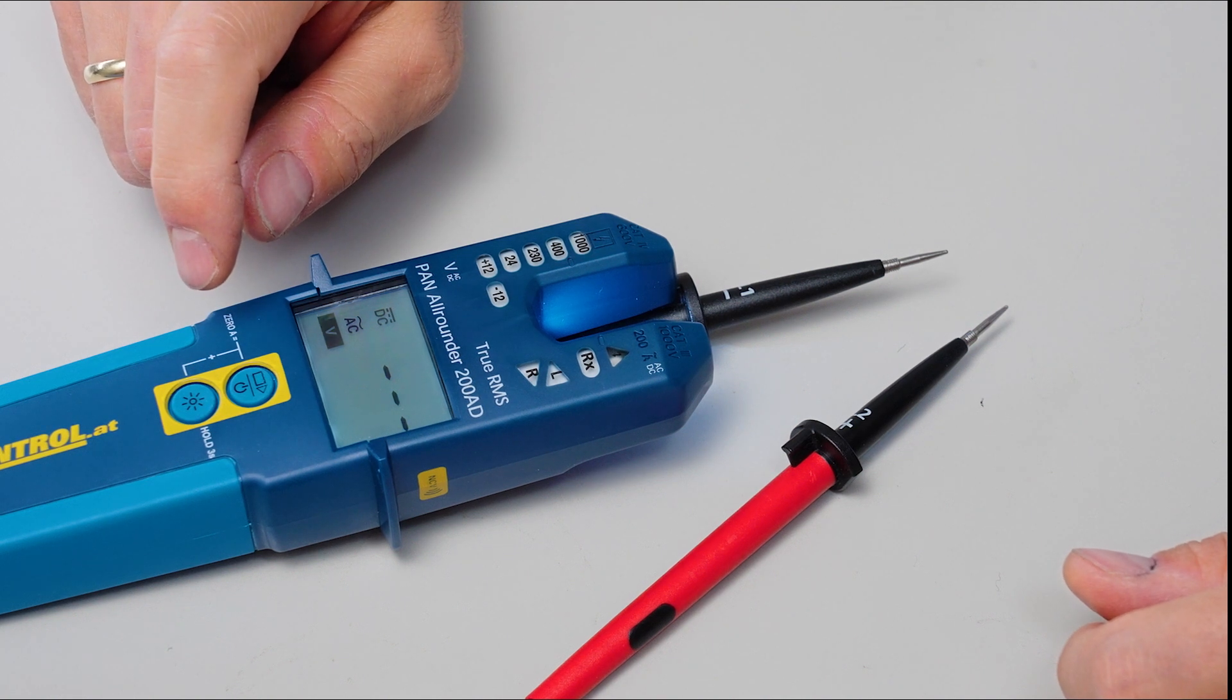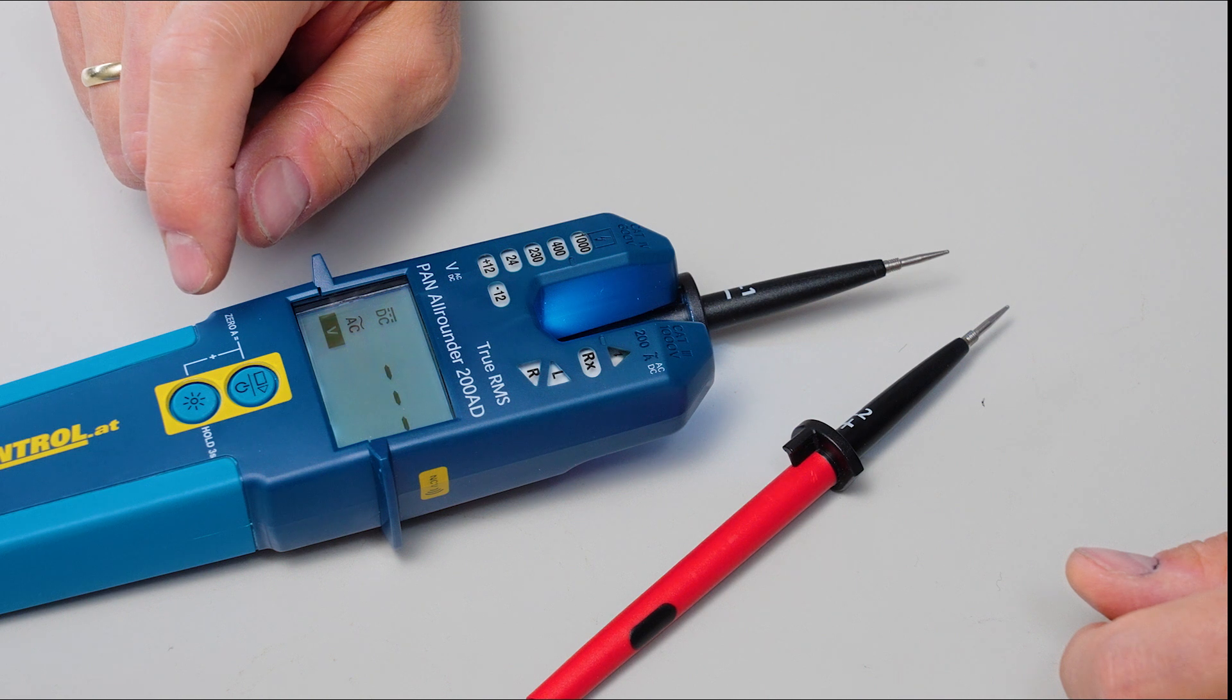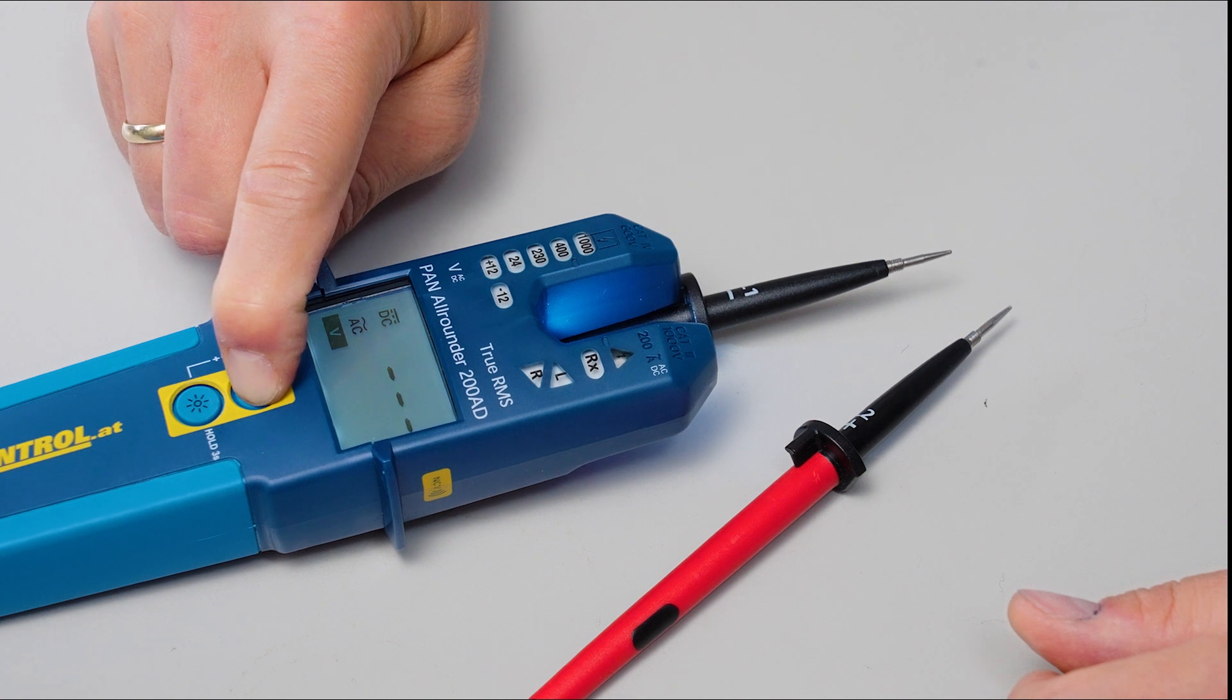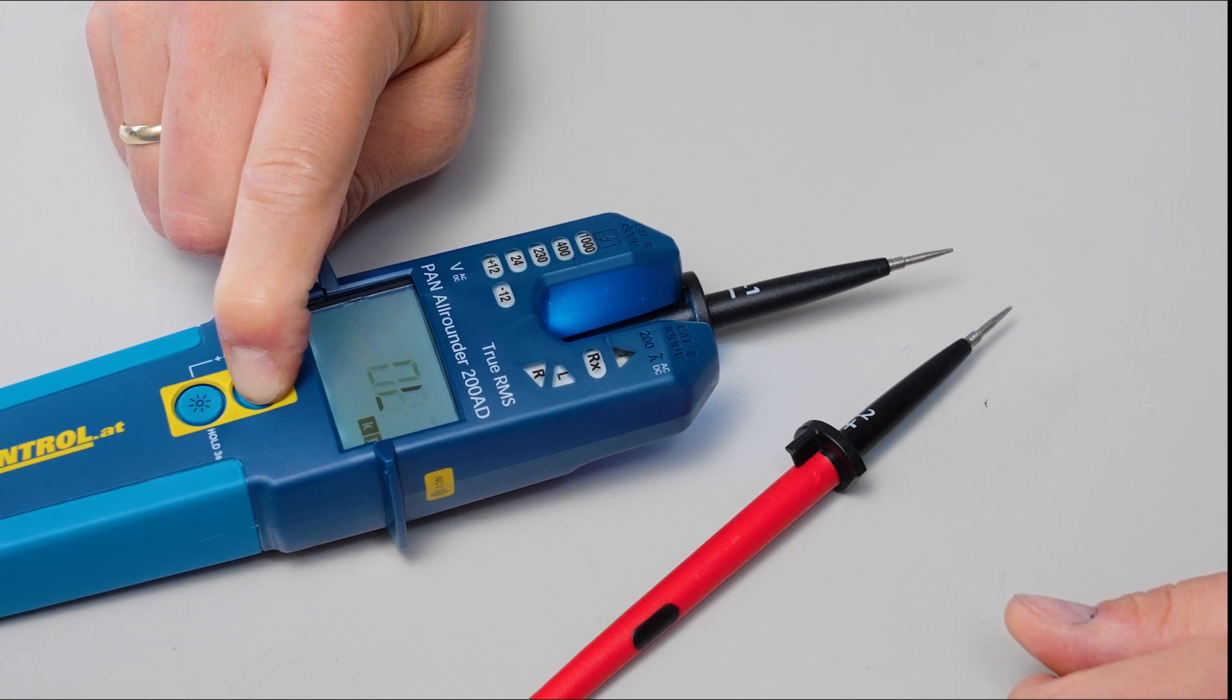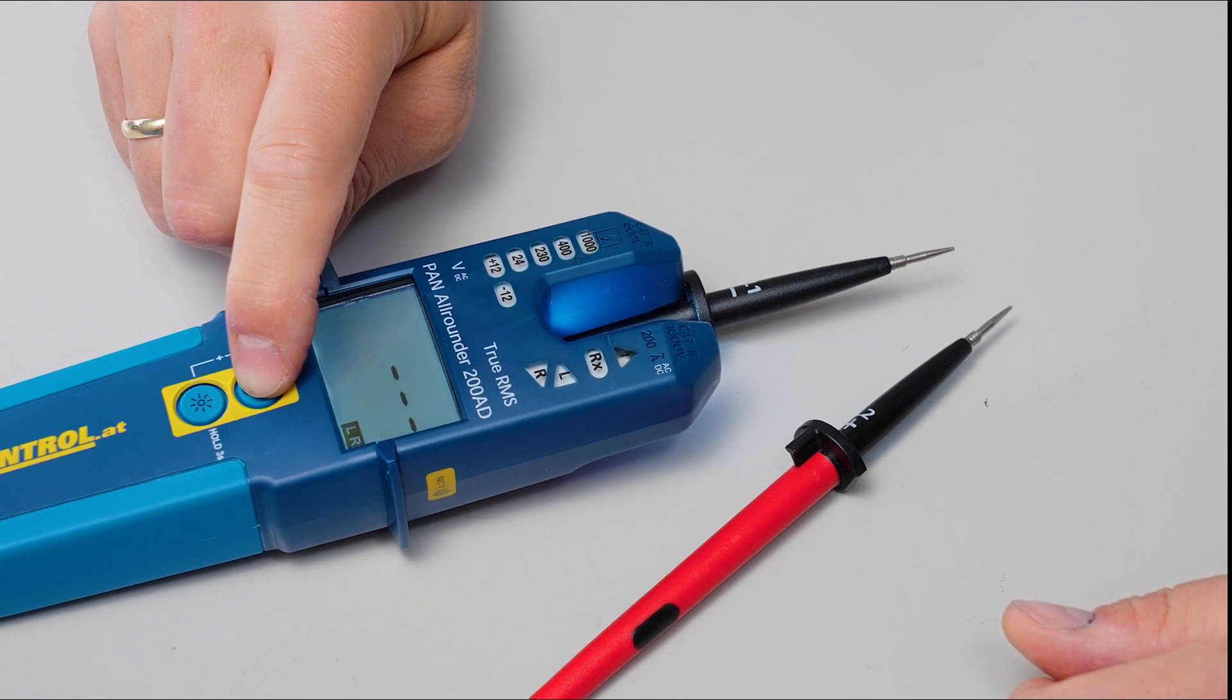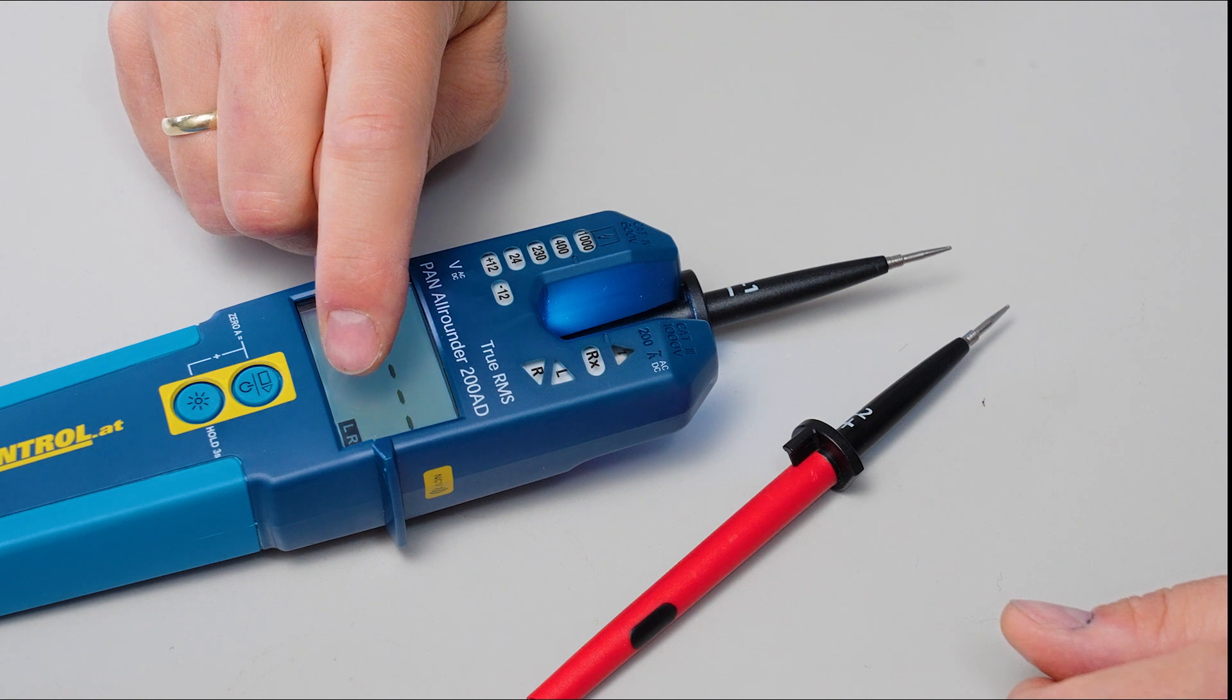And a low resistance range, which operates below 40 Ohm. To activate this, we press the operating button seven times, until the display shows LRX for low resistance mode.